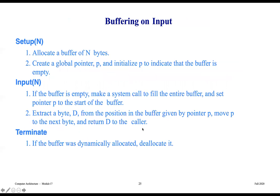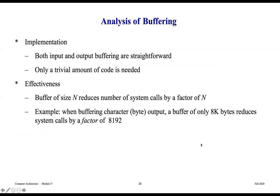In pseudocode for the flush and terminate functions: if the buffer is currently empty, do nothing; if the buffer is not empty, a system call writes the contents and sets the global pointer to the address of the first byte. Terminate calls flush and then de-allocates the buffer. For input buffering: allocate the buffer with the correct pointer; if the buffer is empty, make a system call to fill the entire buffer; extract a byte from the buffer at position p, move p to the next byte, and return the byte to the caller. Terminate de-allocates the buffer if it was dynamically allocated.